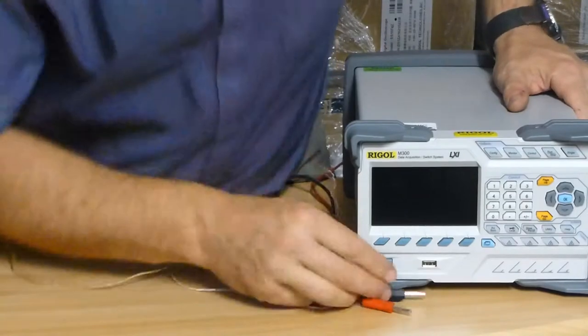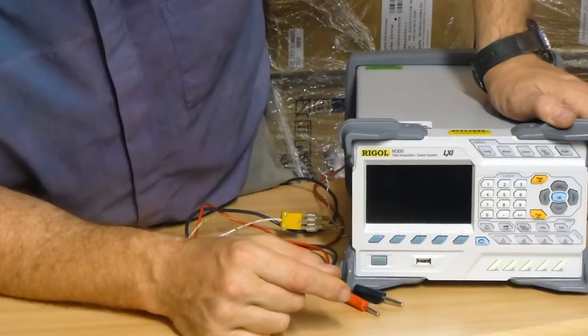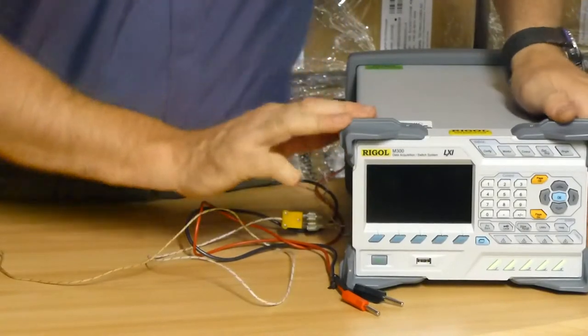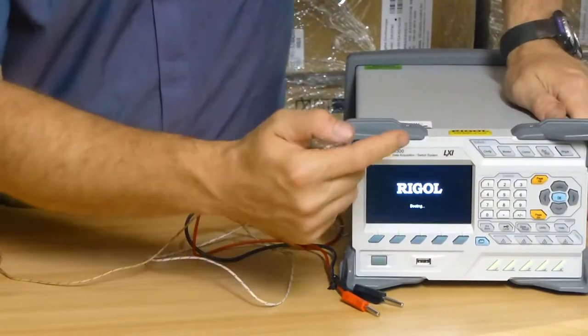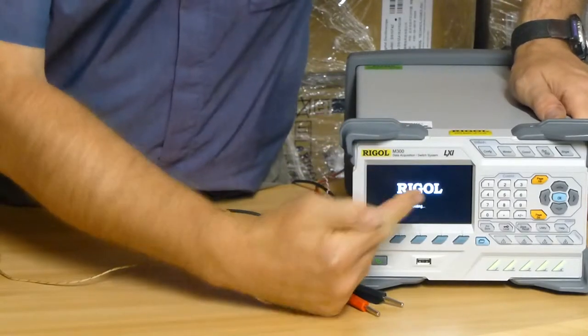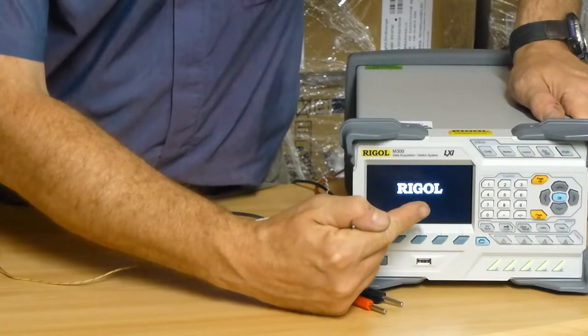So there you go. I've now configured that physically. What I'm going to do is power on that instrument now. While it's booting up, I'll just talk you through the range of measurements that can be made on this instrument. We're going to set it up to measure DC voltage and possibly temperature as well using that thermocouple.